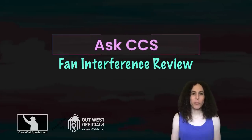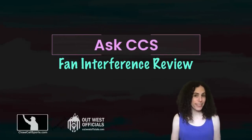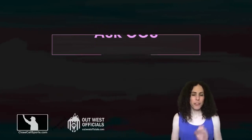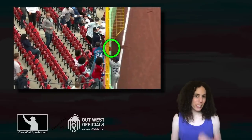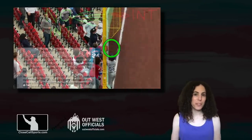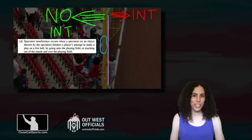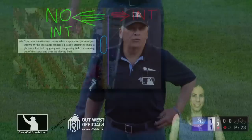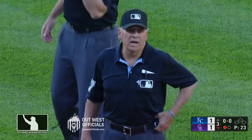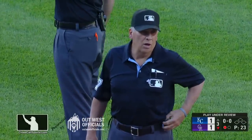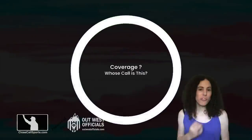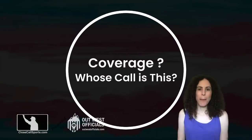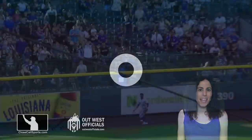Hi everyone, it's Lindsey. We're going to discuss this fan interference play from the Royals-Rockies game. If you're familiar with our prior discussions on these types of plays, this will be a nice refresh. Let's review this — a review on a potential home run in left center field. We saw this earlier with Jacob Stallings. First and foremost, let's establish the umpire responsibility for this play.